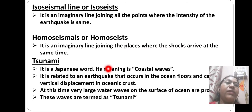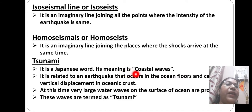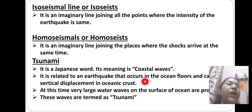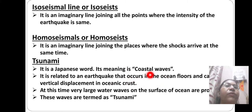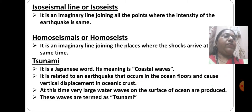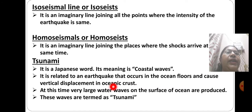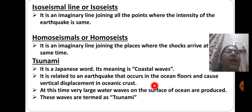Tsunami is a Japanese word meaning coastal waves. It is related to an earthquake that occurs on the ocean floor and can cause vertical displacement in the oceanic crust. At this time, very large water waves on the surface of the ocean are produced, and these waves are termed as tsunami.